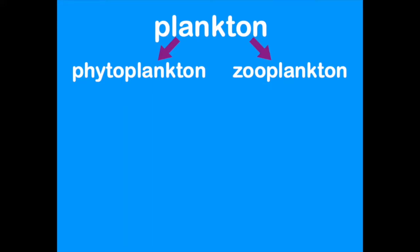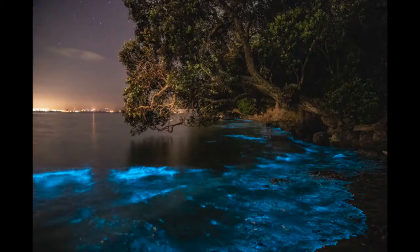Let's look at some examples of these plankton. Serratium is a very common type of phytoplankton. We see these often in our plankton samples at Simi, and we also see them on our night snorkels because they bioluminesce. These little plankton are able to produce their own light. When we disturb them with our swimming, they light up as blue sparks.